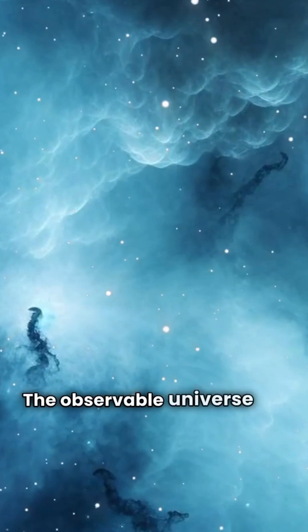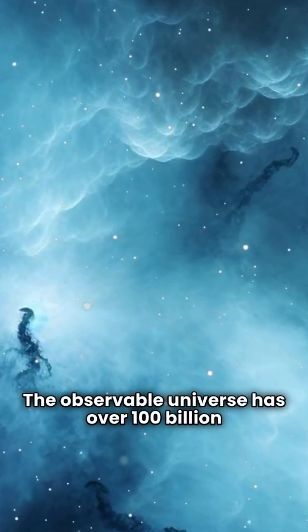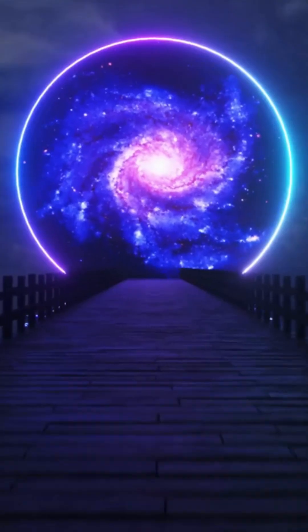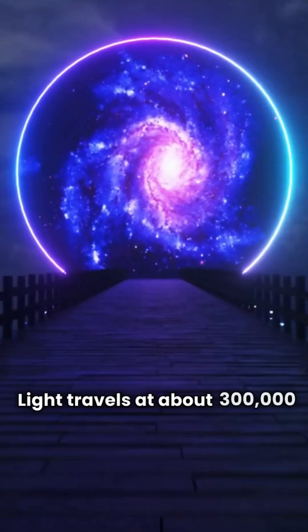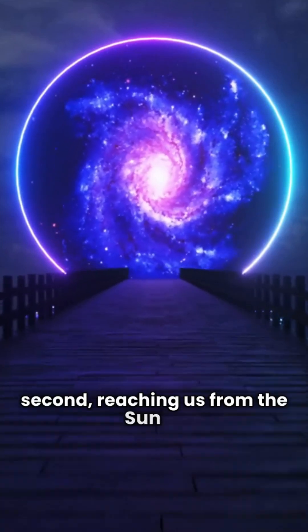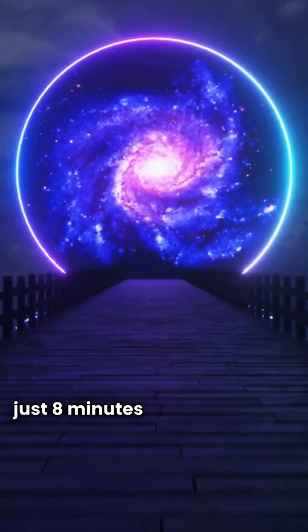The observable universe has over 100 billion galaxies, each with billions of stars. Light travels at about 300,000 kilometers per second, reaching us from the sun in just 8 minutes and 20 seconds.